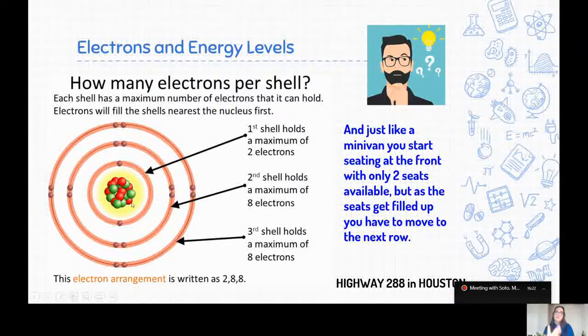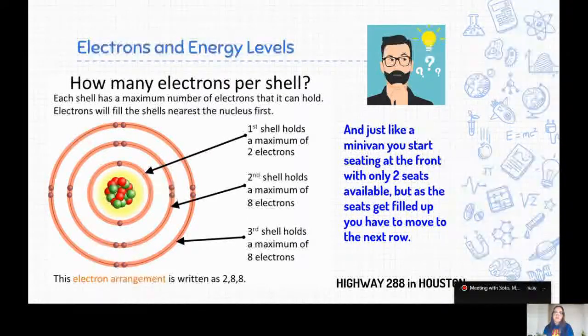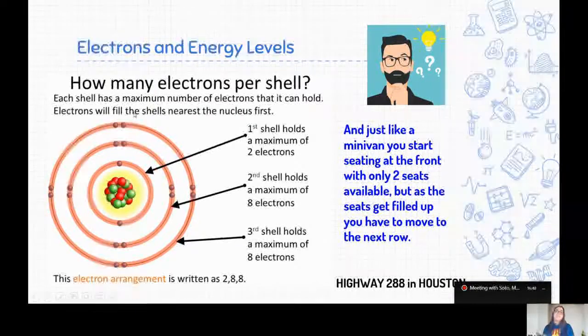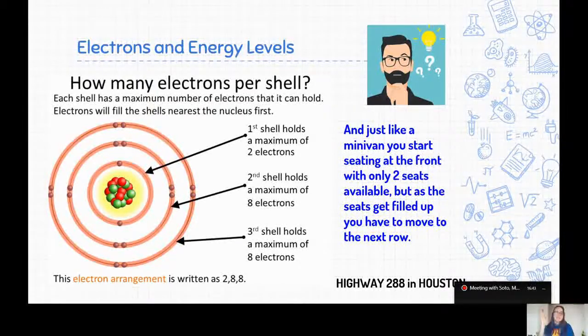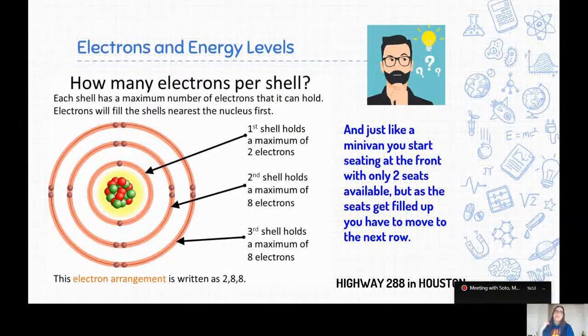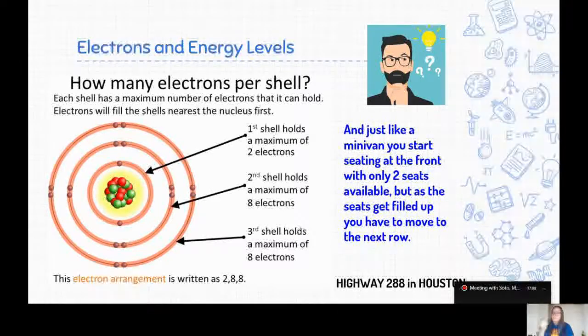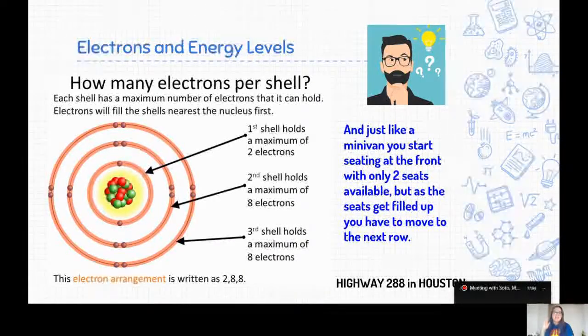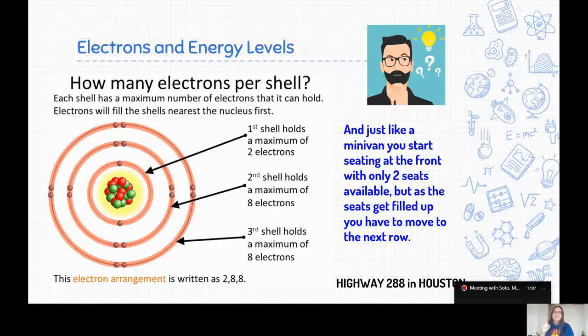So on this first shell, all you can fit are two electrons. Then the second shell fits up to eight electrons. So if you have two on the first one, and then you can add another eight on the second one to get however many electrons you need for that atom. And then on the third shell, you can fit another eight electrons, and there's many more shells to come after the third shell. But for eighth grade, you only have to worry about the first three shells. So you can fit two on the first one, eight on the second one, and eight on the third one. If it helps you to remember, here in Houston, we have a highway called Highway 288. That should help you remember. 288. That is your rule.